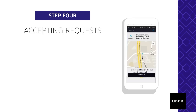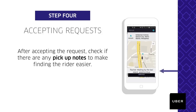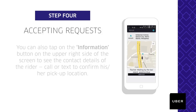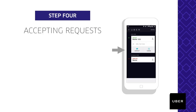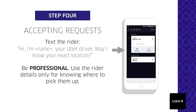Once you accept the request, you will see the location of the rider on the map. You must drive towards the rider immediately. You may check Pickup Notes to help you find the rider, or press the Information button to know their contact details. Text the rider: 'Hi, I'm [your name], your Uber driver. May I know your exact location?' Be professional. You may only use rider details to know the rider's location — do not use their details for any other purpose.